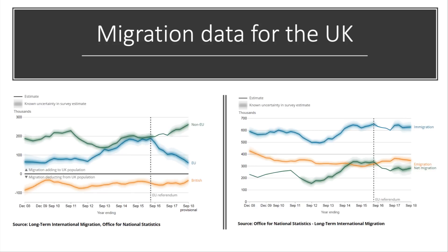Here is the migration data for the UK. The two charts show the net flows of migration — the number of people coming in versus going out. An estimated 283,000 more people came into the UK with an intention to stay than left in the year ending September 2018: 627,000 arrived and 345,000 left. Net immigration from the EU is falling, but net immigration from outside the EU is rising, hence the relatively slow fall in net migration overall.